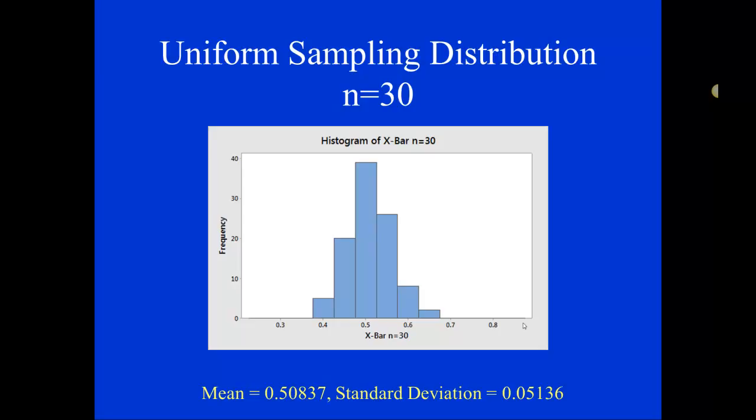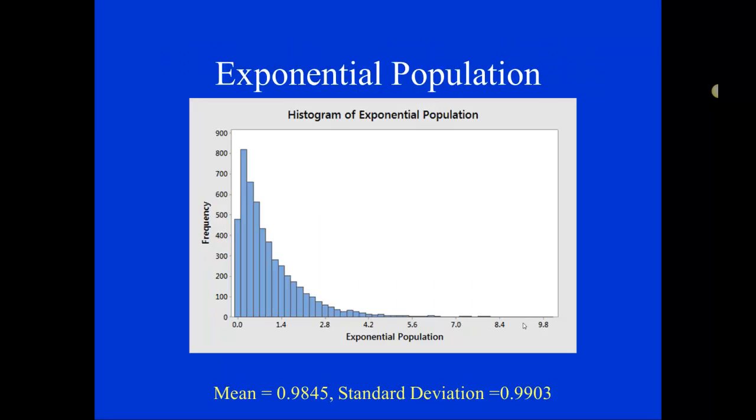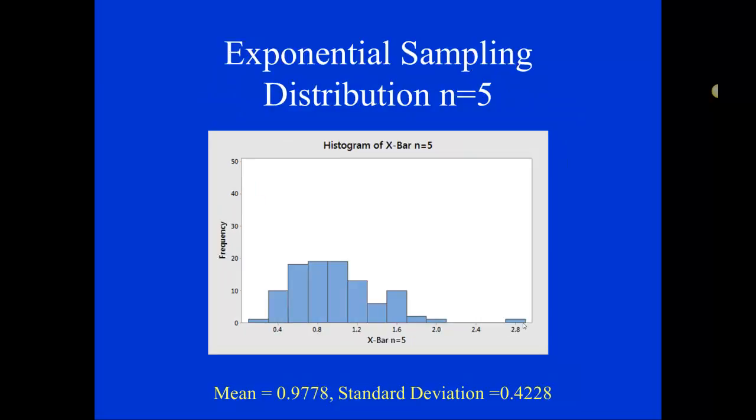But uniform distributions are at least symmetric. What happens when we start with a really ugly distribution, like the exponential distribution? So here is our population that was exponentially distributed. So really skewed, really lots of outliers, really ugly. When we had a sample of size 5, here's the sampling distribution. You can see that the shape of this sampling distribution is still skewed to the right.